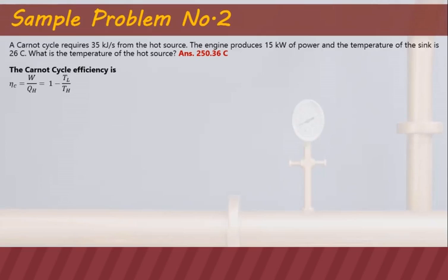Going back to the formula for Carnot cycle efficiency: efficiency equals the desired output over the input. The output for this engine is power and the input is the heat from the hot source. So we can equate that to the Carnot cycle efficiency, which equals 1 minus TL over TH.